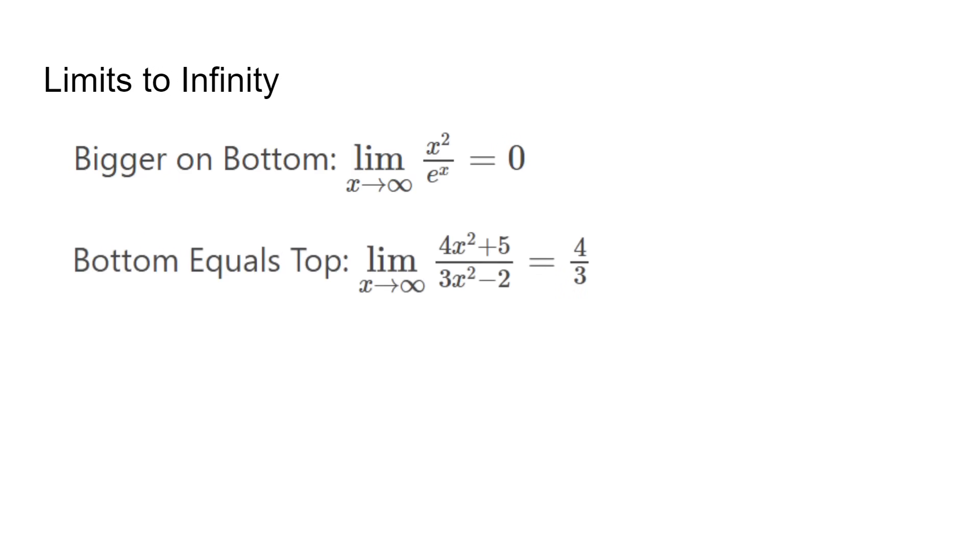The last rule covers if a larger growth rate is on top. We plug in a large positive number if it's positive infinity, and a large negative number for negative infinity. The sign of the answer dictates if the answer is positive or negative infinity.